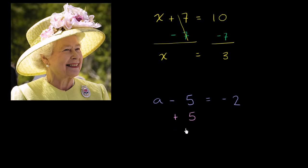But if I want the left-hand side to stay equal to the right-hand side, whatever I do to the left, I have to do to the right. So I'm going to add 5 on the right-hand side as well. And so on the left-hand side, I'm left with a, and the negative 5 and positive 5 cancel out.